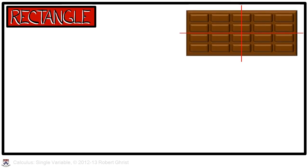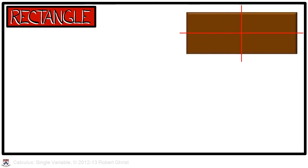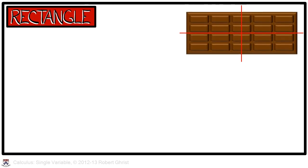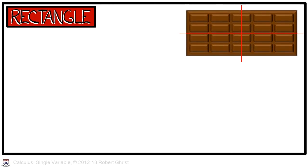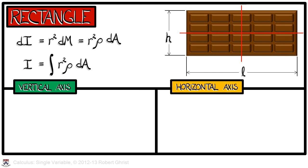Let's consider a different, simpler sort of object, a rectangle, let's say, of length L and height H. We're going to rotate that about a vertical or a horizontal axis. Which do you think would have the greater moment of inertia? Let's compute both and find out. In this case, we need to compute the integral of R squared, rho dA, where rho is the density.